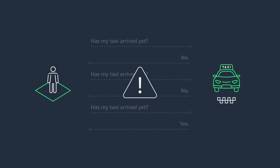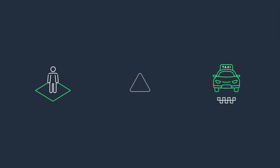Instead of frequently polling to check whether my taxi has arrived, I'm going to re-architect my application so that my taxi booking service sends an event when the taxi arrives. My consumer service will now listen for incoming events, and my taxi booking service can simply push a message to it once my taxi is here.